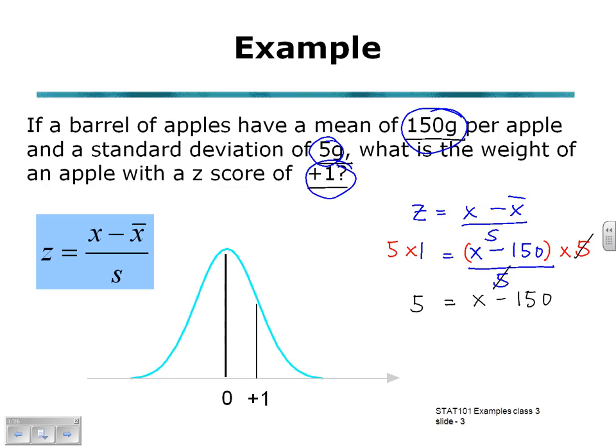And then we need to add 150 to both sides to leave X on its own and solve for our value of X. So X will be equal to 155 grams. The weight of this apple with a Z-score of positive 1 will be 155 grams.